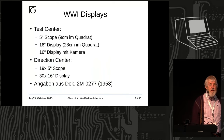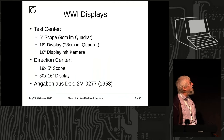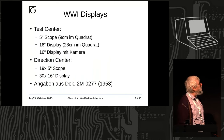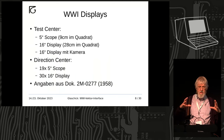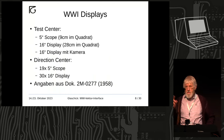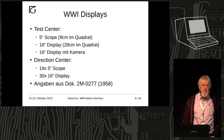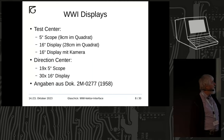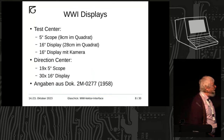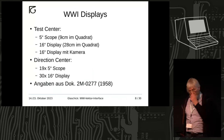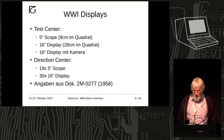Wildwind hatte sehr viele Displays. Eines der wichtigen Dokumente findet man unter BitSavers: im Testcenter gab es drei Displays — ein normales 5-Zoll-Oszilloskop, ein 16-Zoll-Display auf Radarbasis und noch ein weiteres 16-Zoll mit Kamera, das man gern als Line-Printer-Ersatz oder zum Plotten von Grafiken nutzte. Und im sogenannten Direction-Center gab es 19 kleine Oszilloskope und 30 große Displays — alles an dieser kleinen Maschine.